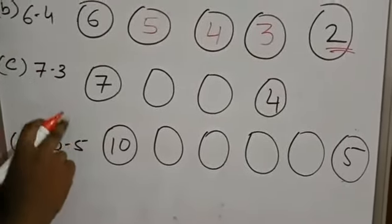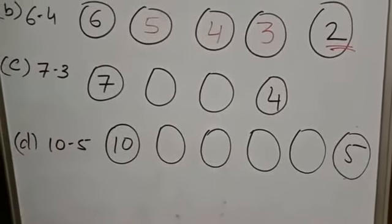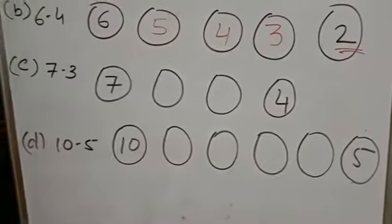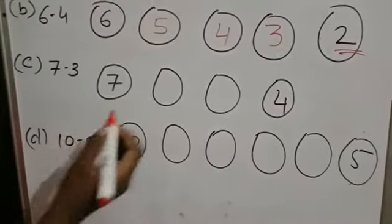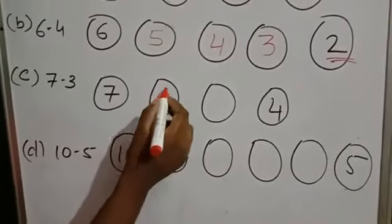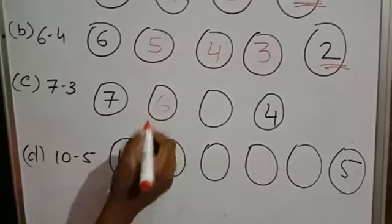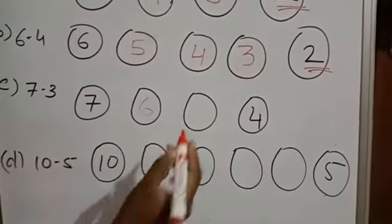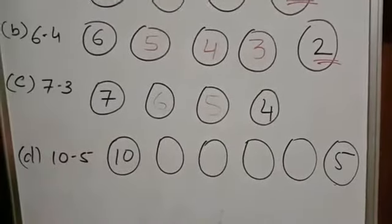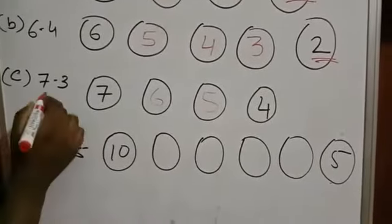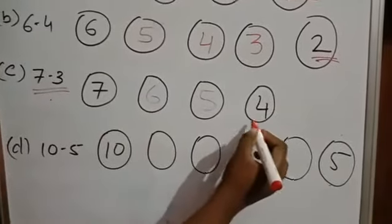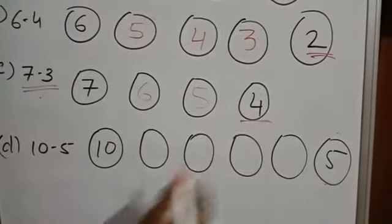The third one: 7 minus 3. Before 7 is 6, before 6 is 5, before 5 is 4. That means we are getting 4.